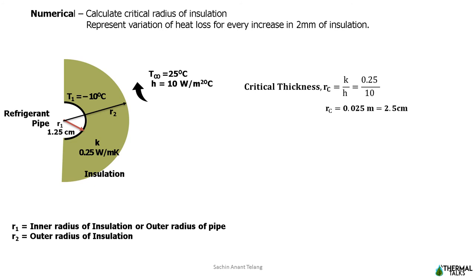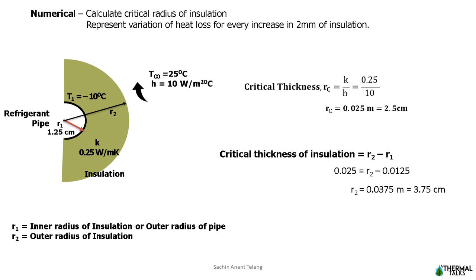We can easily calculate the critical radius. The value of thermal conductivity of insulator K and convective heat transfer coefficient H are both given. So Rc equals K divided by H, giving Rc equal to 2.5 centimeter. Therefore, critical thickness of insulation equals Rc minus R1, where R2 is the outside radius of insulation and R1 is the inside radius of insulation. Finally, we get the value R2: at a distance of 3.75 centimeter from the center of the pipe, the heat transfer is maximum.